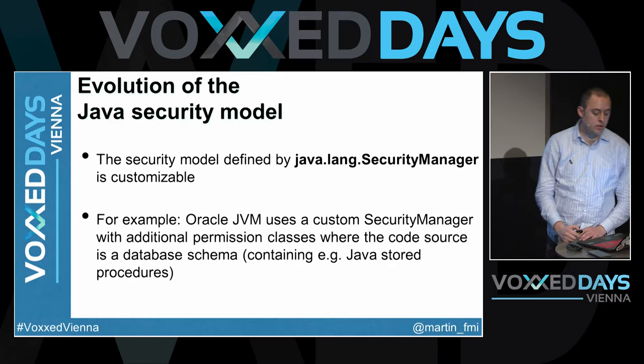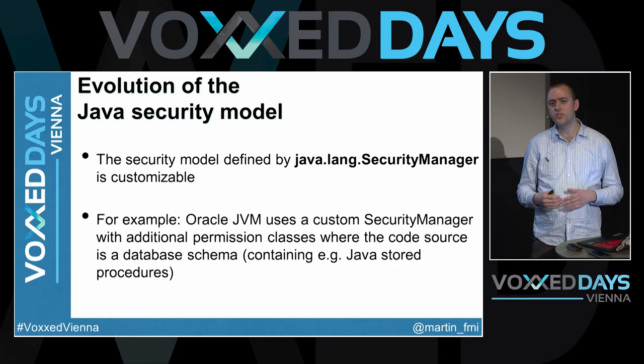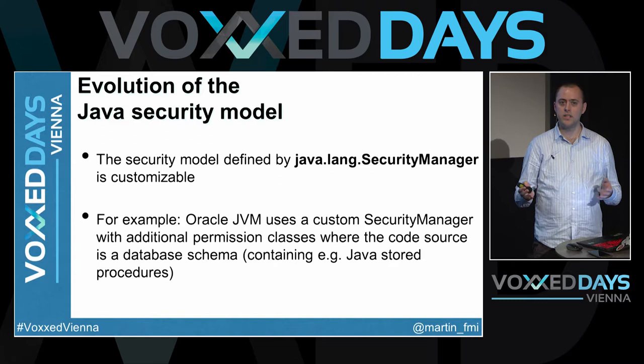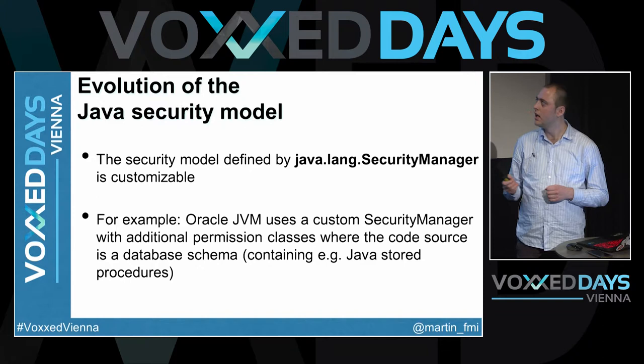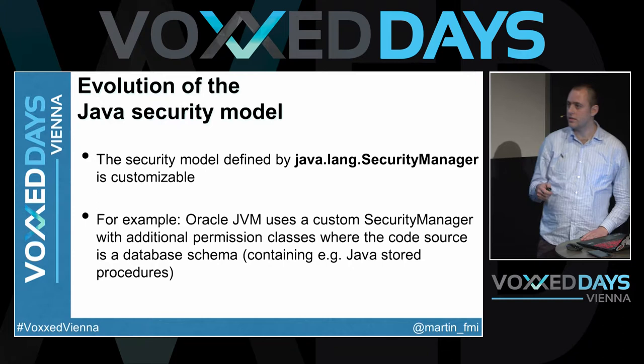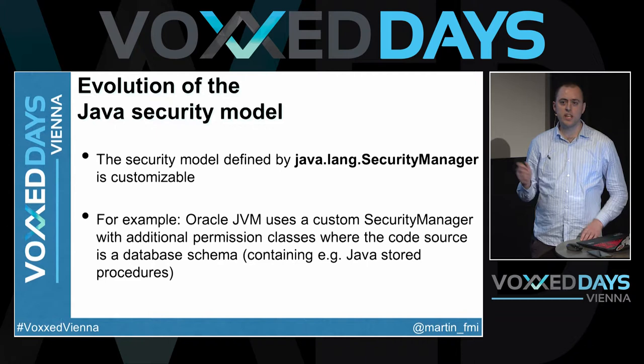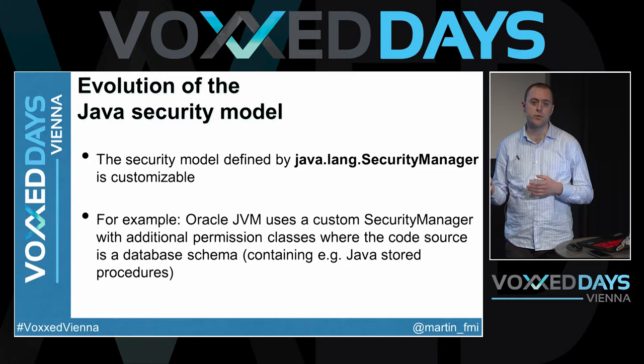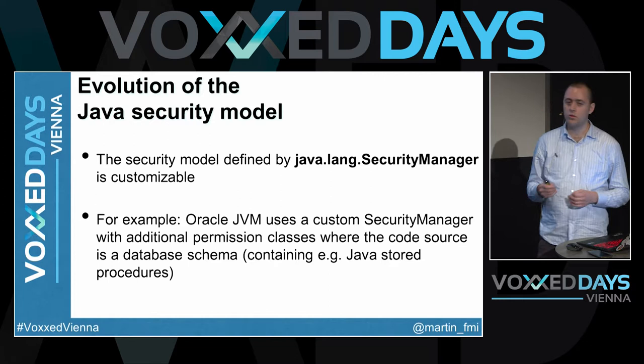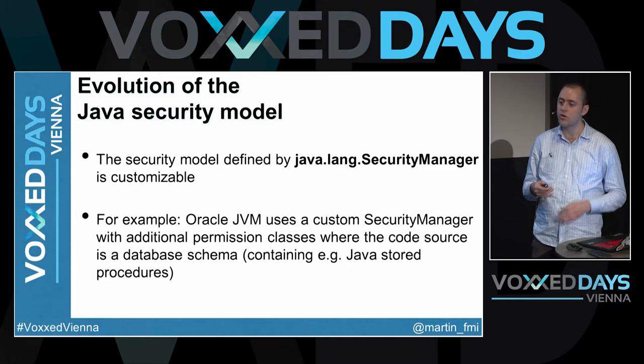The security model defined by the security manager is highly customizable. One interesting application is in the Oracle database, where you can execute Java stored procedures and specify different permissions in a relational database table. The security manager inside the Oracle JVM has a custom implementation that checks permissions stored in a relational database table rather than in a security policy file. You can create your own implementation of a security manager, but you have to be very careful because a few subtle mistakes can open security gaps.